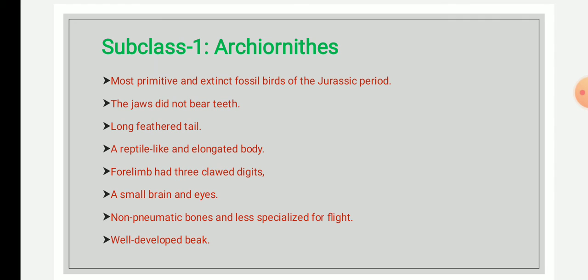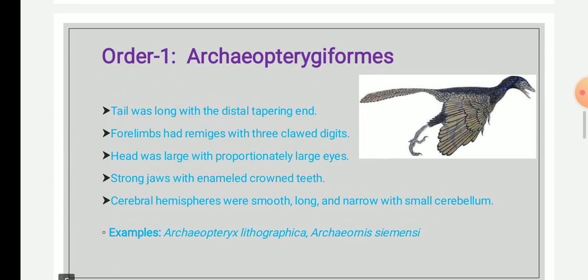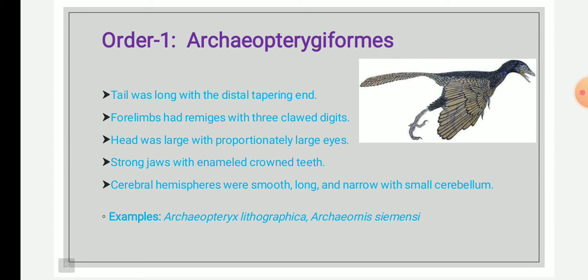They had a well-developed beak. Subclass Archaeornithes includes one order — Order Archaeopterygiformes.